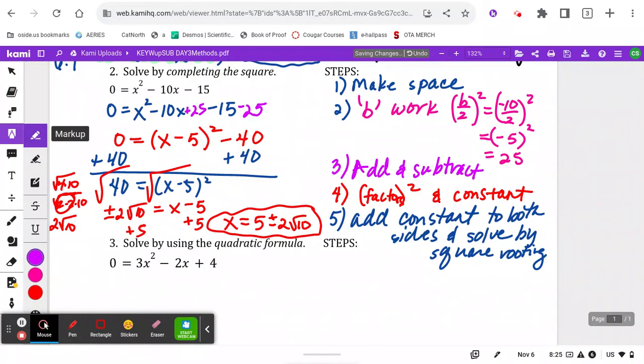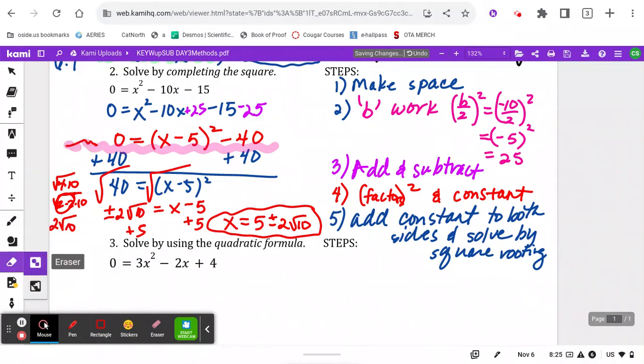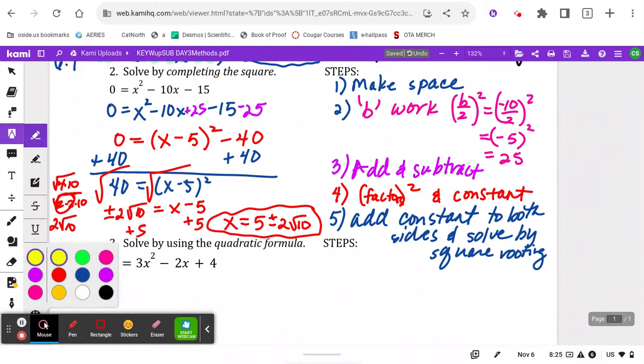So as you guys can see, up until about right here, you know this method. But we need to do a little work to get used to the rest of the part on the bottom. All right, so this step here, make space, was bumping over this negative 15. This step here, the b work, was on this b. This step right here, the perfect square factors, was this step right here. And this right here, combining the constant, was this right here.